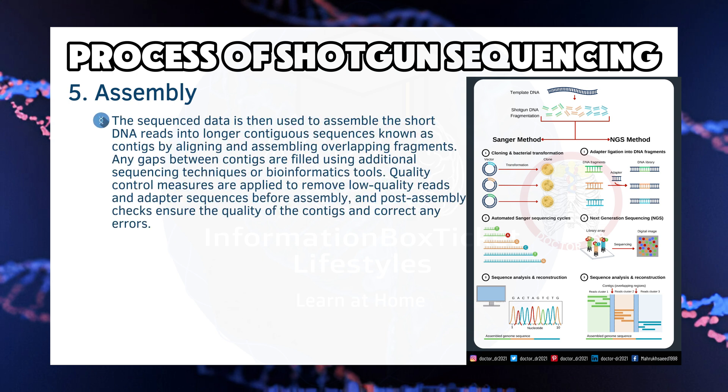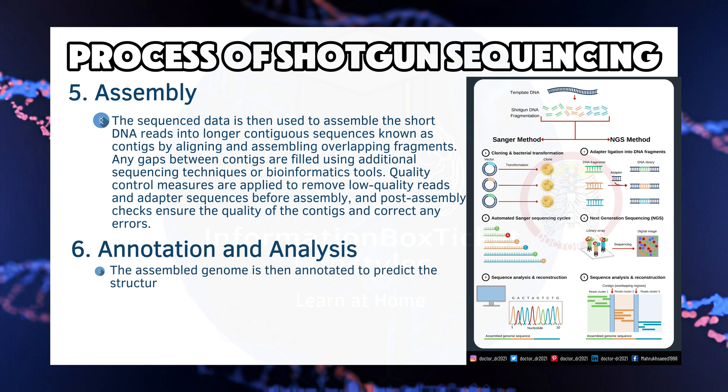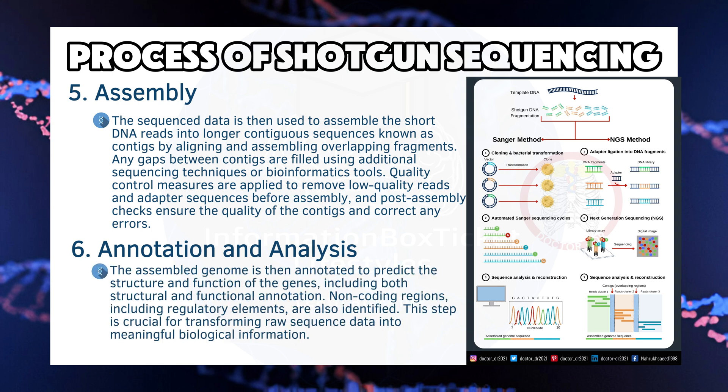Step 5 — Assembly: The sequenced data is then used to assemble the short DNA reads into longer contiguous sequences, known as contigs, by aligning and assembling overlapping fragments. Any gaps between contigs are filled using additional sequencing techniques or bioinformatics tools. Quality control measures are applied to remove low-quality reads and adapter sequences before assembly, and post-assembly checks ensure the quality of the contigs and correct any errors. Step 6 — Annotation and Analysis: The assembled genome is then annotated to predict the structure and function of the genes, including both structural and functional annotation. Non-coding regions, including regulatory elements, are also identified. This step is crucial for transforming raw sequence data into meaningful biological information.